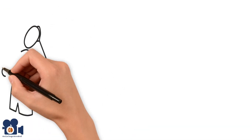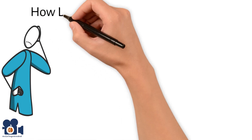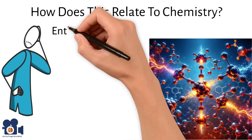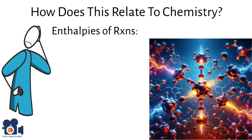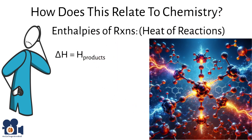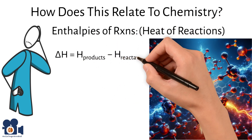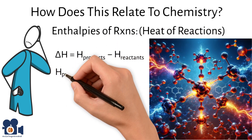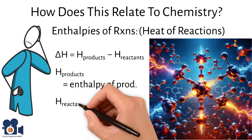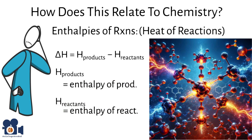All of this might seem unrelated to chemistry, but during a chemical reaction there are changes in the heat exchange of the molecules, which we call enthalpies of reactions — sometimes referred to as heat of reactions. Chemists define this as delta H equals H products minus H reactants, where H products is the total enthalpy of the products and H reactants is the total enthalpy of the reactants.